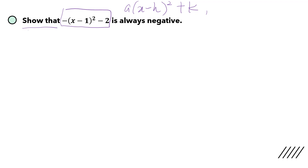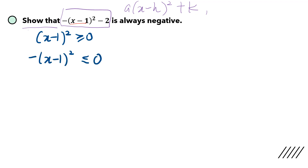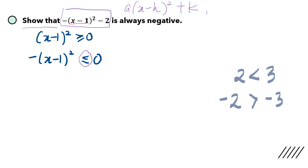There's no need to expand this. We need to do some explanation. We know that when we square x minus 1, the value will always be greater than or equal to 0. And if you were to multiply negative on both sides, then you have to flip the inequality sign. So I'm going to take negative 2 on both sides.